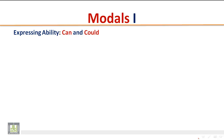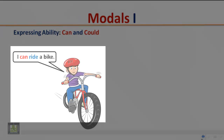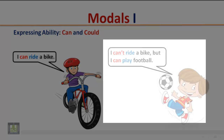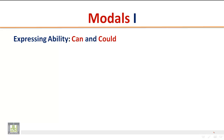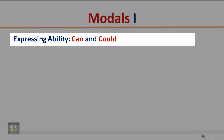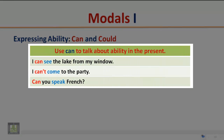Expressing ability: Can and Could. Listen to the following short conversation and pay attention to the use of can and could. 'I can ride a bike.' 'I can't ride a bike, but I can play football.' Use can to talk about ability in the present. Examples: I can see the lake from my window. I can't come to the party. Can you speak French? These examples express ability in the present.